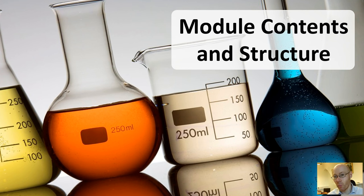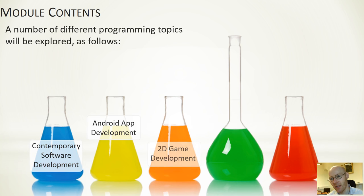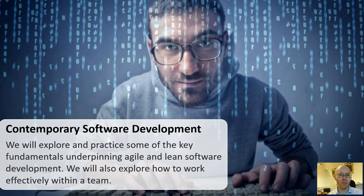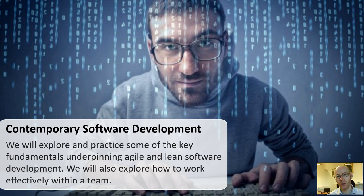In terms of module content — what will we actually explore in the videos and lectures? It breaks down into five different areas. We'll look at contemporary software development, Android development, 2D games, and more in the second semester, code quality, code performance, and user experience design. When thinking about contemporary software development, that will be in terms of coding techniques, testing techniques, and Agile and Lean development techniques. You'll be using an Agile process to create your project over a number of sprints, focusing on a small number of Agile and Lean principles but doing them well.